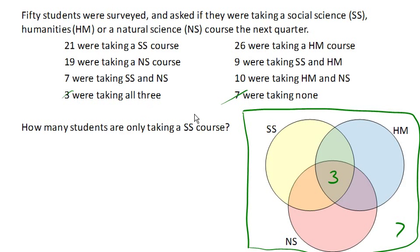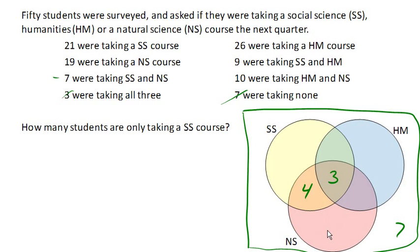I'm going to mark these off as I work with them. Seven students were taking a social science and a natural science class, which means those seven people would be in the intersection of the SS and NS sets. Of those seven, three are taking all three, which leaves four students who were taking social science and natural science but not a humanities class.